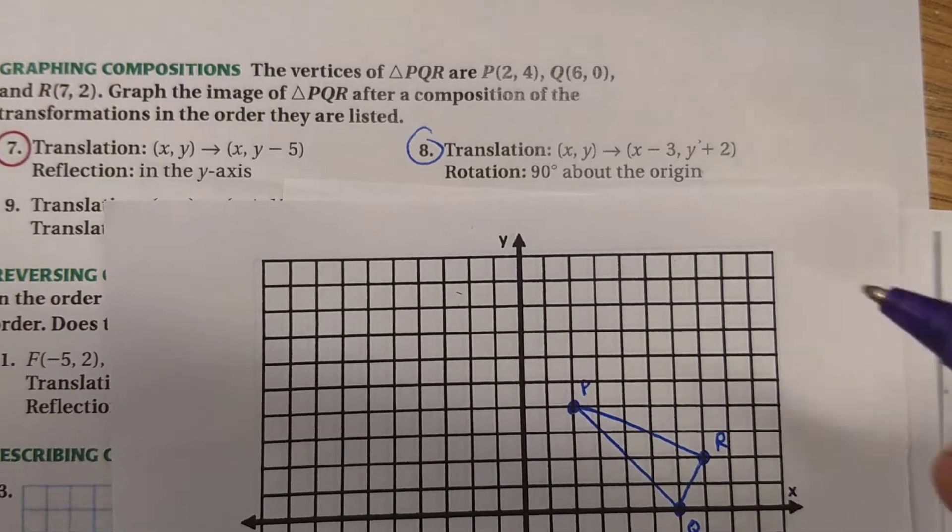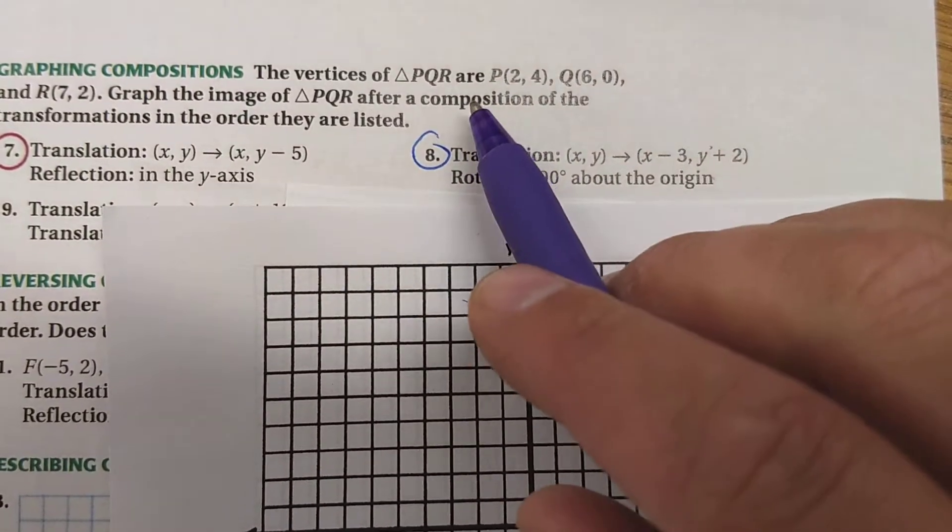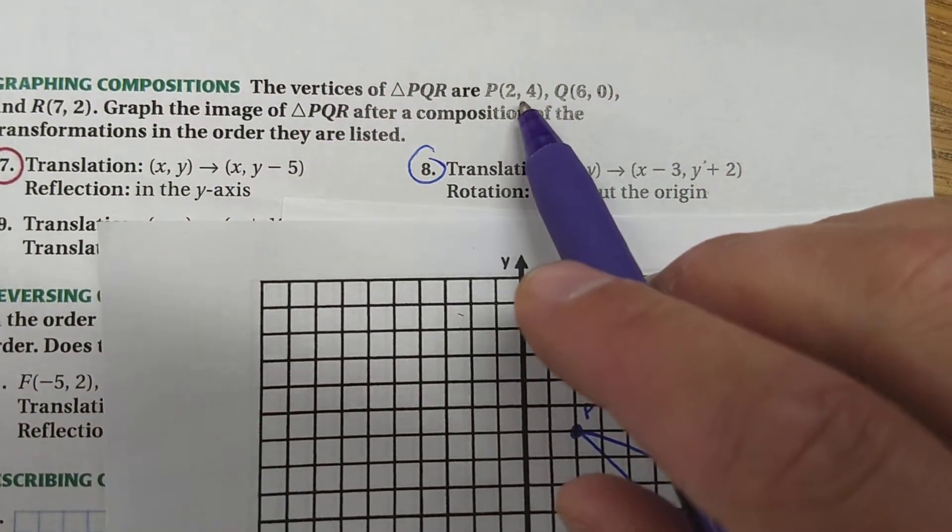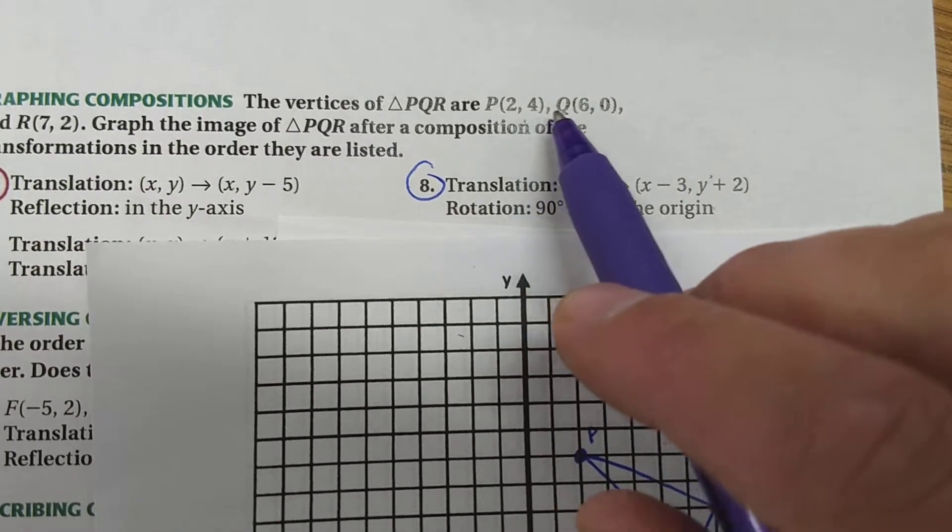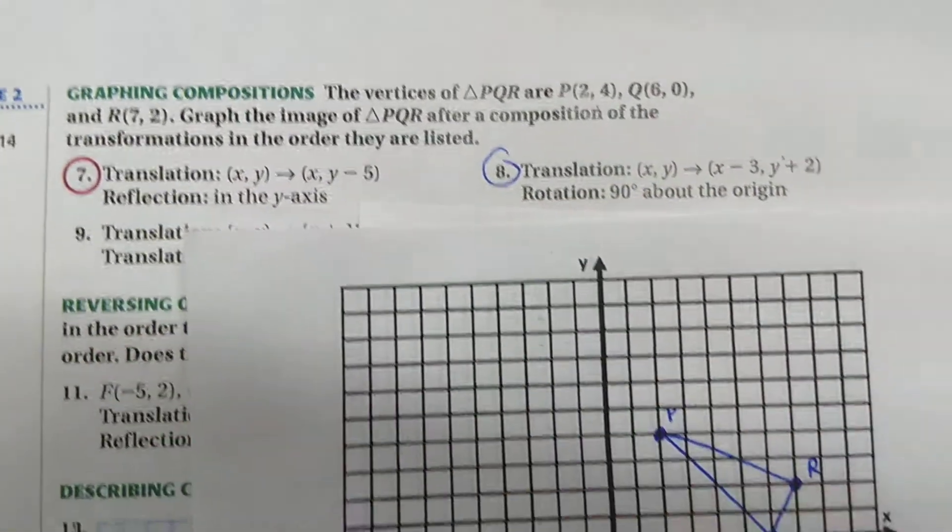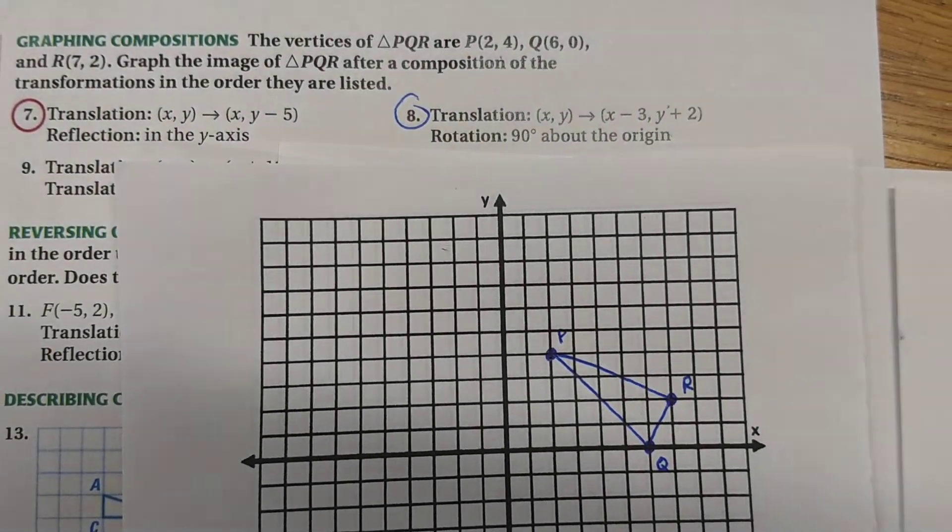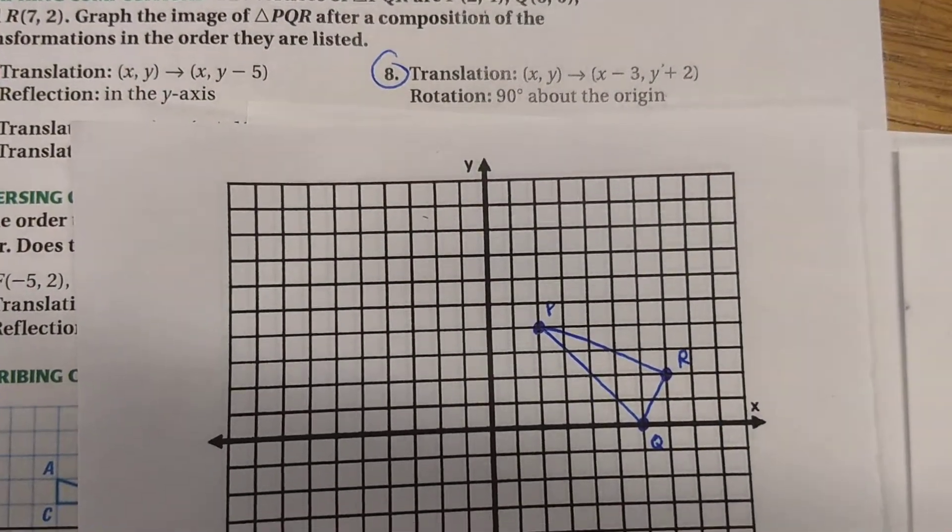You'll notice that the vertices, the corners of this triangle, are in specific spots. So 2, 4, 6, 0, and 7, 2, and that is what I'm showing down here. We'll get back to why we need those specific coordinates in a little bit.